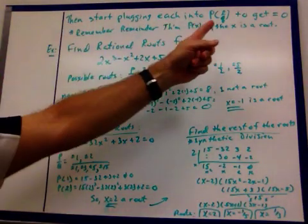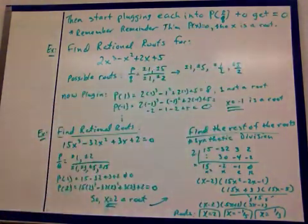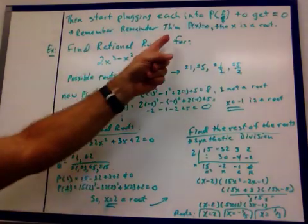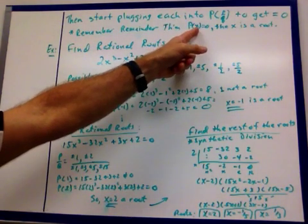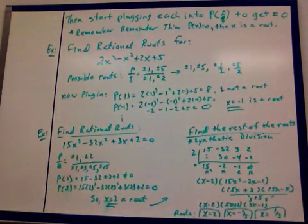So what you do then is you start plugging each of those p/q's into your function for x until you get one to equal 0. Remember that remainder theorem. We said whatever you plug in for x, if you get 0 for your y, then that x is a root.